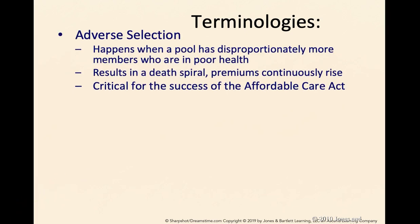Adverse selection refers to a situation in a risk pool where there is a disproportionately higher number of members in poor health — more people who are at high risk. This results in a death spiral because the risk pool can no longer maintain viability: a lot of people are sick and using up the funds, and contributions to the risk pool are not enough to cover those in poor health, who are now the majority. Premiums continuously rise. This is critical for the success of the Affordable Care Act, which depends on more young, healthy people signing up.